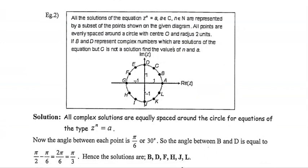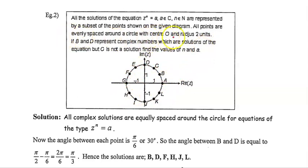Let's look at another example. All the solutions of the equation z to the n equals a, where a is a complex number and n is a natural number, are represented by a subset of points shown in the diagram. All points are evenly spaced around a circle with centre O and radius 2. If b and d represent complex numbers which are solutions, but c is not a solution, find the values of n and a.